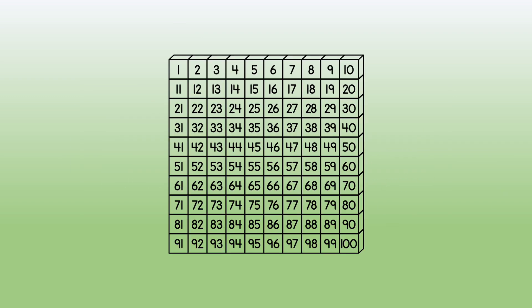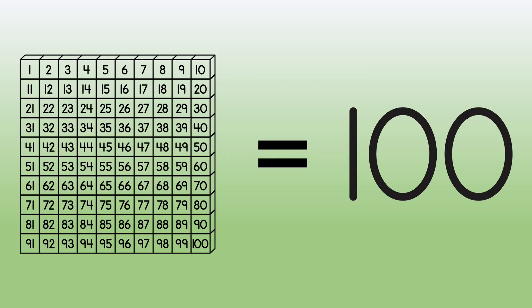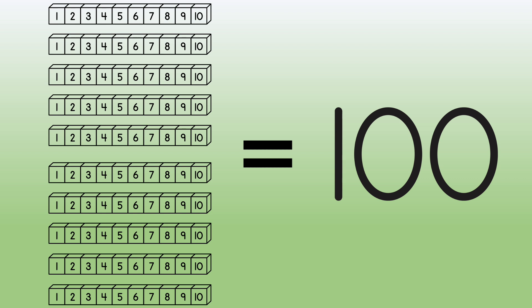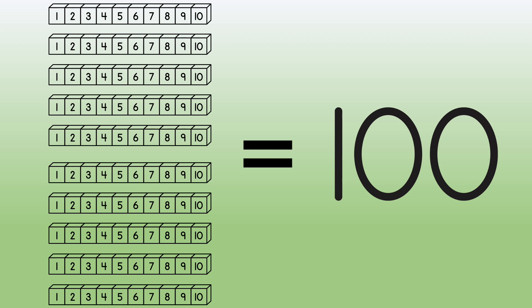This is a flat. A flat stands for 100. If we have 10 longs and push them together, we get a flat. 10 tens is 100. You can also see 100 bits in a flat.